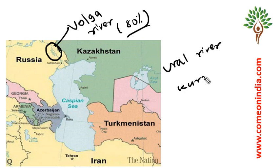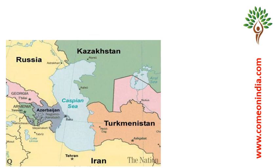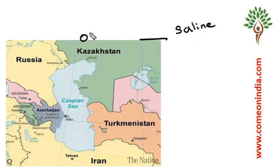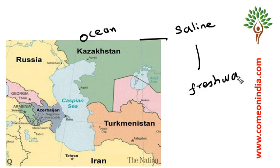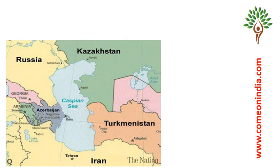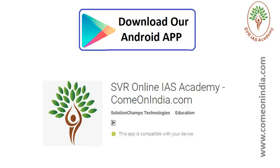Remember, the Caspian Sea is not a fresh water body — it is a saline water body, but not up to the salinity of an ocean. So it has intermediate salinity between that of an ocean and fresh water. These are the important prelims points you should know on this topic.